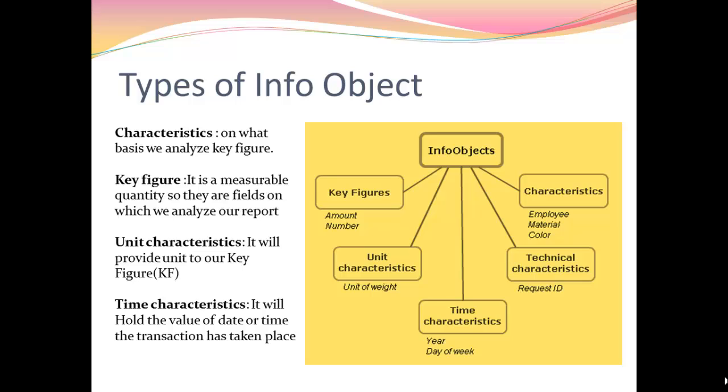What are key figures? It is purely a measurable quantity which are used to analyze our report. For example, customer number C001 has a salary of 1 lakh. So 1 lakh is what we will be analyzing - that's our key figure. Customer number is our characteristic type of info object. Also, key figure doesn't mean that a telephone number is a key figure - no, telephone number is a characteristic because we won't be analyzing on it.